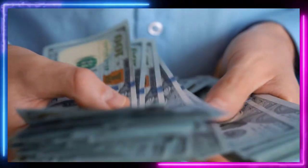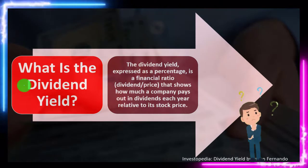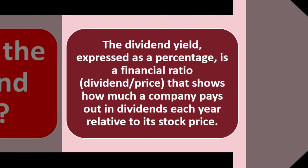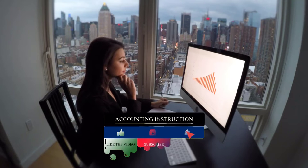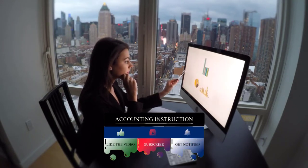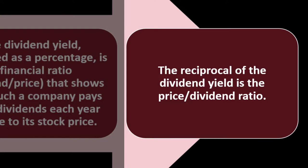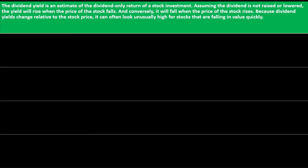As the company generates revenue, we may want those dividends so we can use the money for personal needs or invest them elsewhere. So now we want to think about how we can measure our returns on stock investments. The dividend yield — expressed as a percentage — is a financial ratio: the annual dividend divided by the price per share. It shows how much a company pays out in dividends each year relative to its stock price. The reciprocal of the dividend yield is the price-to-dividend ratio.